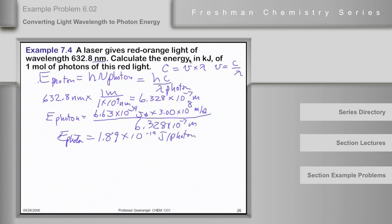Okay. Now, the problem actually asks for one mole of photons. So we'll have to multiply this number by Avogadro's number to get per mole and then convert to kilojoules.